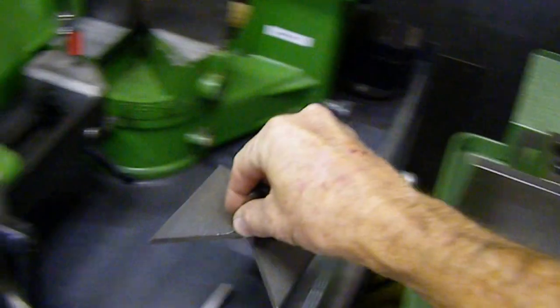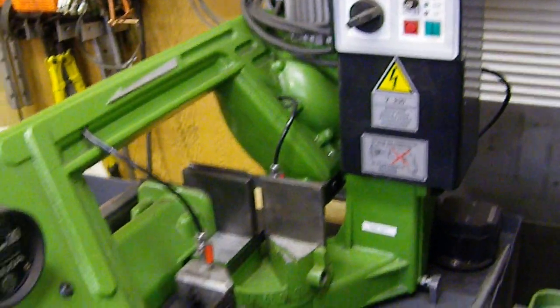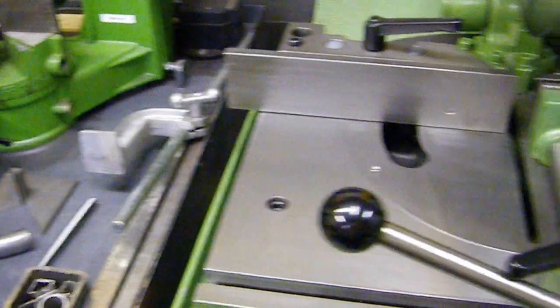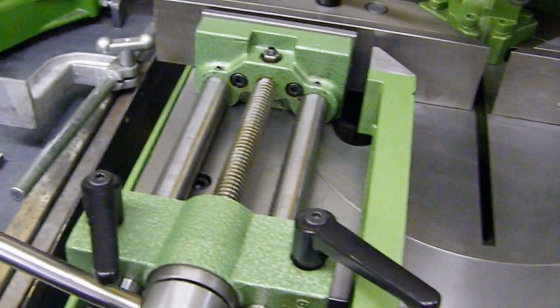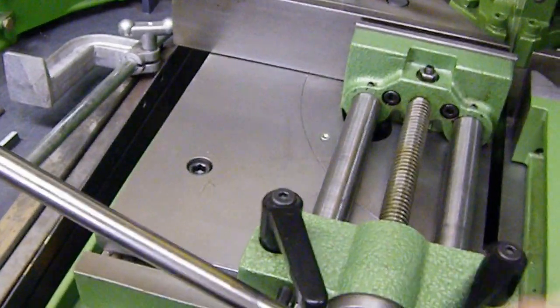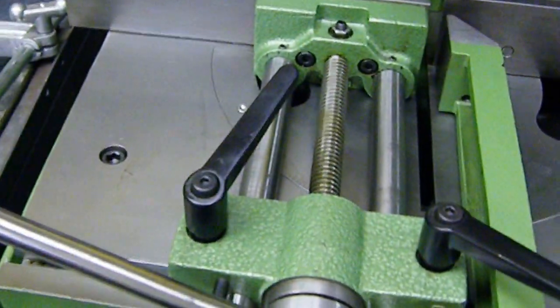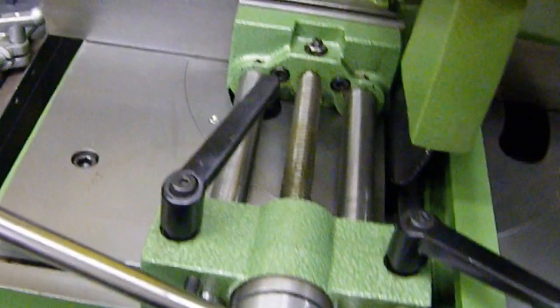I'm going to set these aside for now. This is the bandsaw that we also use in our business. On the table here it's got a sliding vise. Nice and smooth. You can set it to the right, clamp it down, cut your piece.